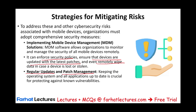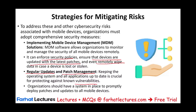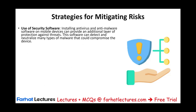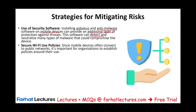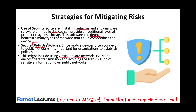Organizations should also have regular updates and patch management — keeping the operating system and all applications up to date is crucial to protect against vulnerabilities. Another mitigating strategy is the use of security software, such as installing antivirus and anti-malware software on mobile devices, providing an additional layer of protection. Organizations should also establish a policy around secure Wi-Fi use, which might include using a virtual private network (VPN) to encrypt data transmission and avoid transmitting sensitive information over public networks.